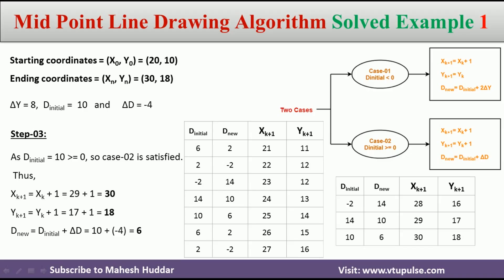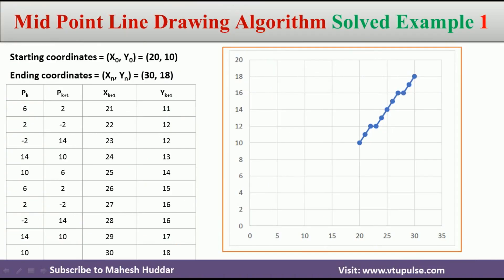30 and 18 are xk+1 and yk+1 respectively. If you observe carefully, we have reached the last point — the end point — which is (30, 18). Once we reach the end point, we stop the algorithm. We then draw all the points starting from (20, 10) through to (30, 18). These are all the in-between points. (20, 10) is the first point and (30, 18) is the last point. Finally, we draw the line from (20, 10) to (30, 18), and this is how the line looks.